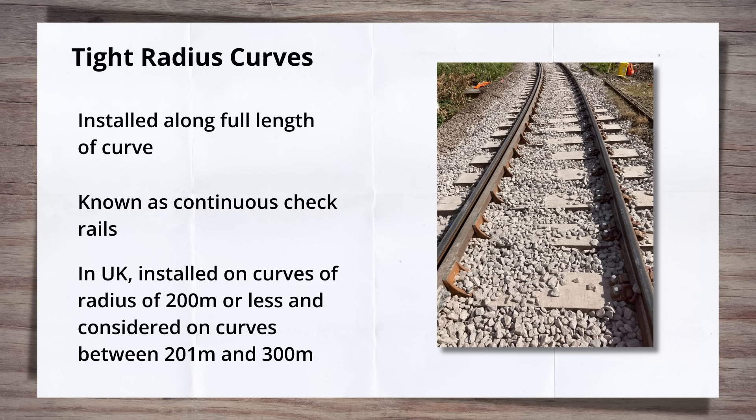This is accentuated when the radius of the curve is tight. It leads to what is known as a high angle of attack. This is the angle at which the wheel runs in relation to the rail. One of the places the highest angles of attack occur is on a tight radius curve. Now, if you want to know more about angle of attack, I have a video on it with a link in the top right hand corner or down in the description below.